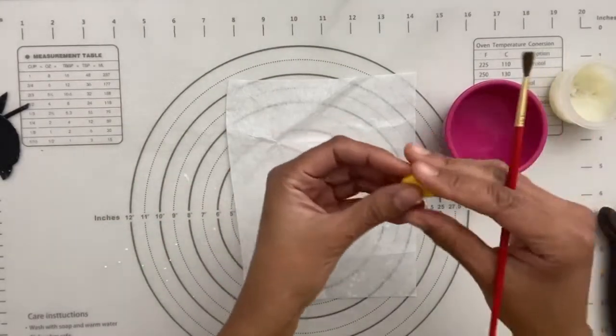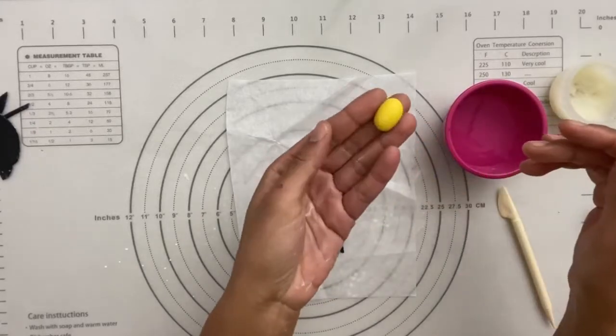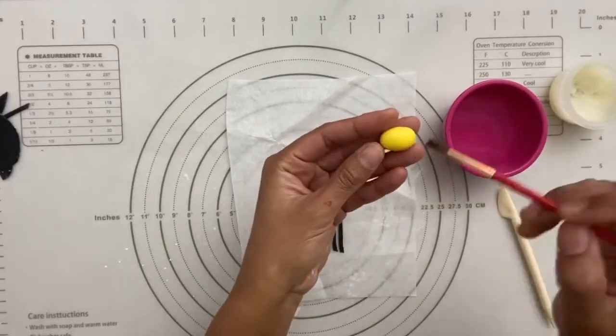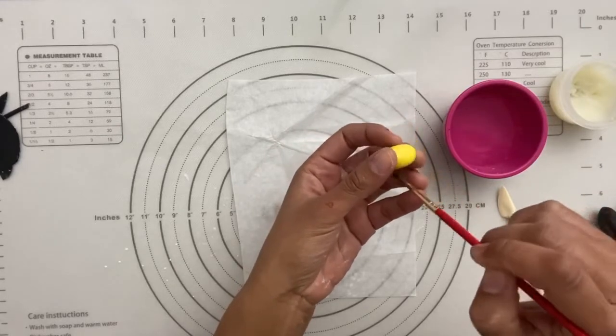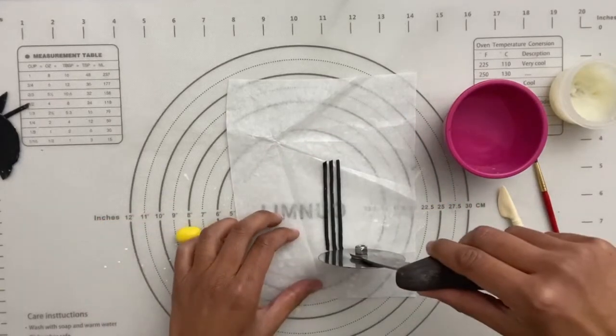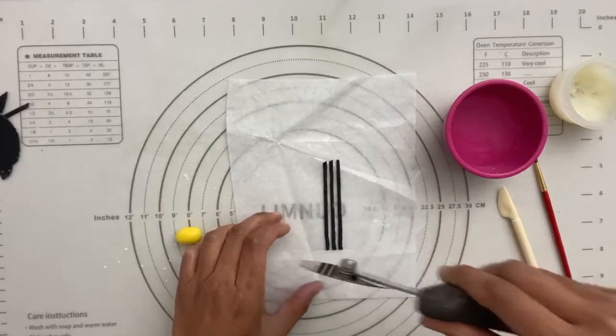So just place them about the distance apart that you want them. Straighten them out. Now they'll stick to the shortening. So first I would make, if I was making a bunch, I would make a bunch of these little yellow balls. And then one by one, I'm just going to brush around the center with the water.